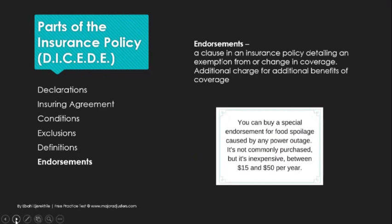Last but not least on the parts of the policy is the endorsements. I mentioned that with earthquake — flood actually wouldn't be an endorsement, it would be its own policy. An endorsement is really just adding additional coverage for an additional charge. For example, you can buy a special endorsement for food spoilage caused by a power outage. Between 15 to 50 bucks per year really isn't that bad, especially if it's around Christmas time and you've got your ham, turkey, and several side dishes that you just spent two to three hundred bucks on, and there's a snowstorm with the power out for three days.